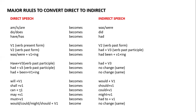If you see 'will' in reported speech, change it to 'would'. 'Shall' becomes 'should'. 'Can' becomes 'could'. 'May' becomes 'might'. 'Must' becomes 'had to'. If 'would', 'could', 'might', or 'should' already come in the direct speech, there is no change at all — same as it is.